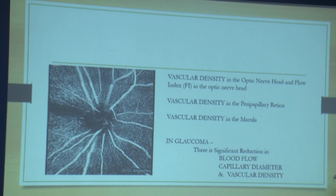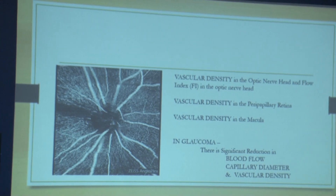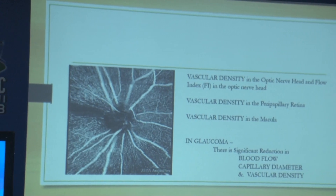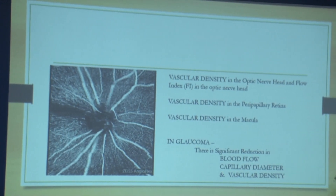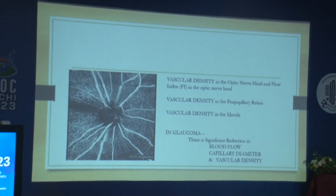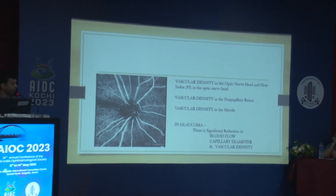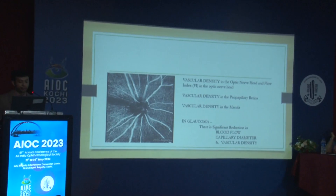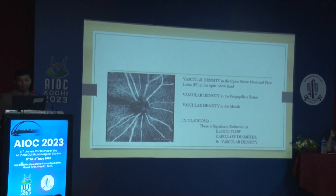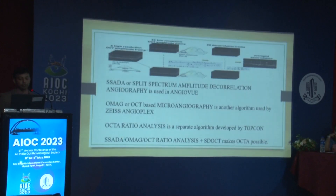The data OCTA provides includes vascular density in and around the optic nerve, the flow index of the optic nerve, vascular intensity in the peripapillary retina, and vascular density in the macula. The main significance in glaucoma is blood flow, capillary diameter, and vascular density around the optic nerve.